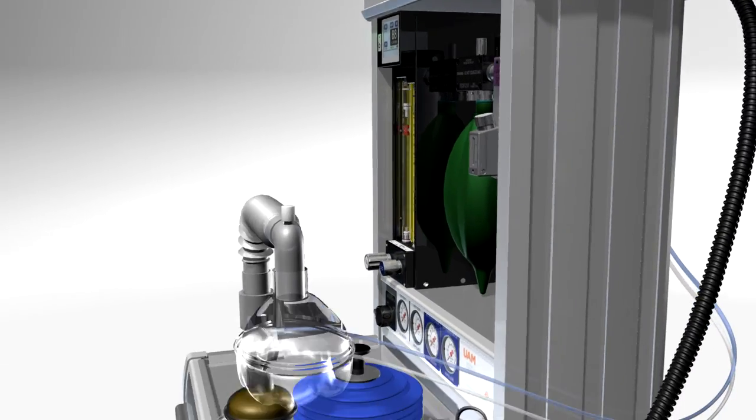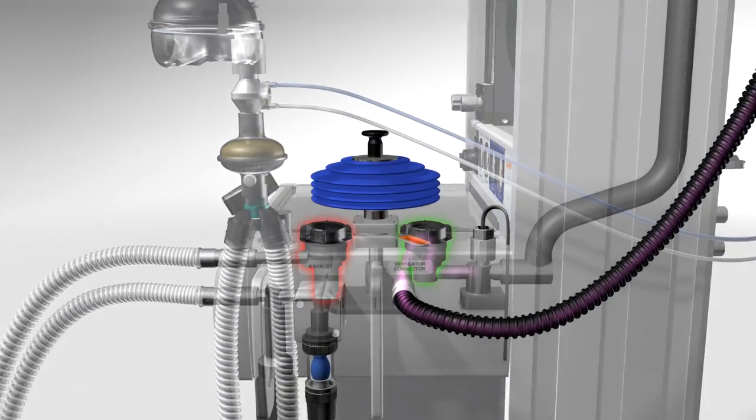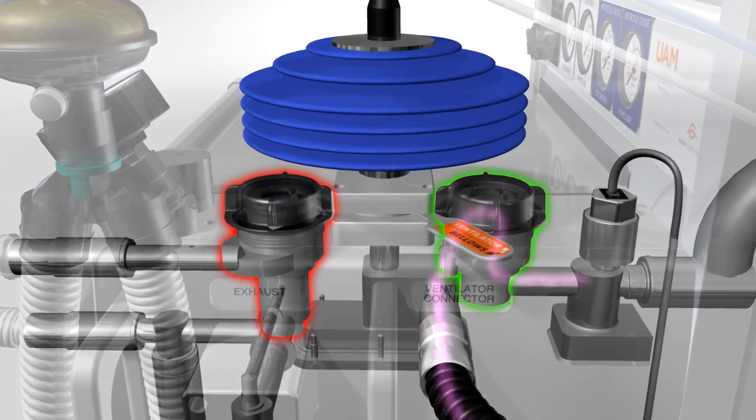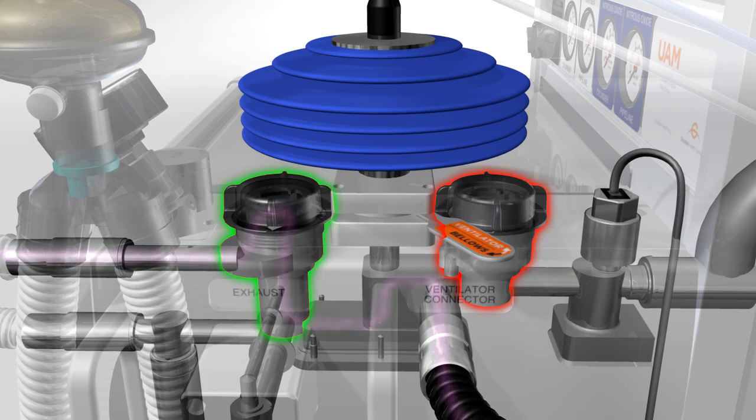Anesthetic gas is delivered to the breathing block and through the one-way valves and inspiratory limb in the same way as the manual bellows shown earlier.